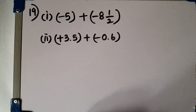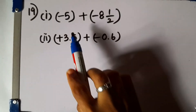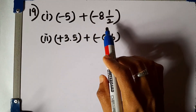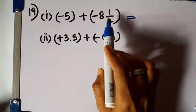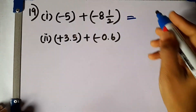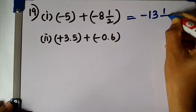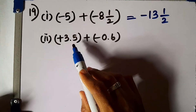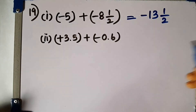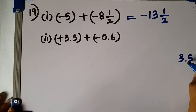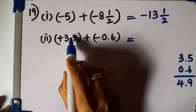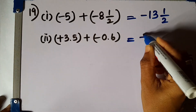Question number 19. Fill the empty cells. First one: two directed numbers with negative signs. When two negative numbers are added, the answer also gets a negative sign. We add the two magnitudes: 8 plus 5 is 13, so the answer is minus 13. Second: two directed numbers with opposite signs. We take the difference of the magnitudes: 3.5 minus 0.6 is 2.9. Wait — 15 minus 6 is 9, giving 4.9. The answer gets the sign of the largest magnitude, so plus 4.9.